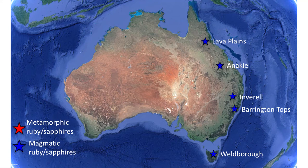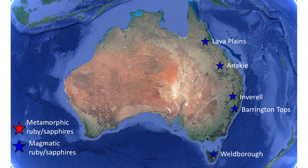Australia has been one of the major historic producers of gem corundum. The gem corundum deposits stretch across nearly the entire eastern seaboard of Australia, from lava plains in northern Queensland down to Tasmania in the south. Queensland itself has produced many exceptional sapphires and to this day continues to turn out beautiful gems, especially world-class green, yellow, and blue sapphires.